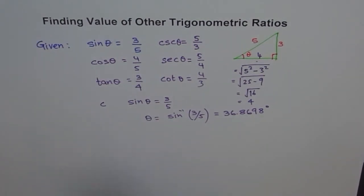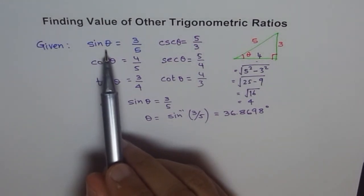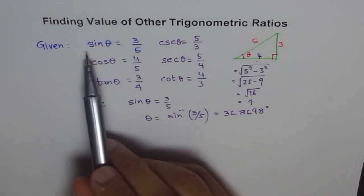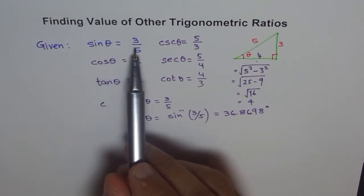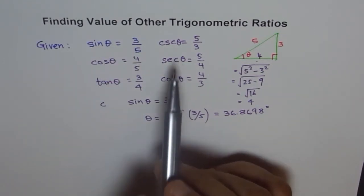So the other method was that, given the angle, we can find, given sine function, value of sine function, we can find the angle. And from the angle, we can find the rest of the things.